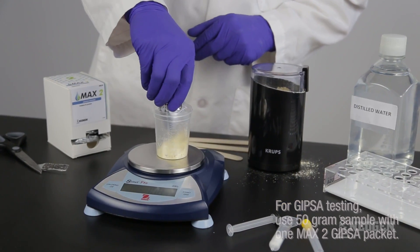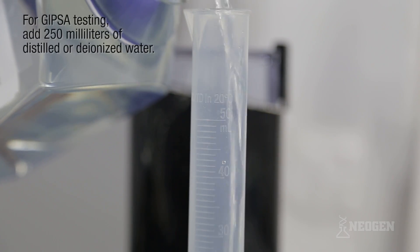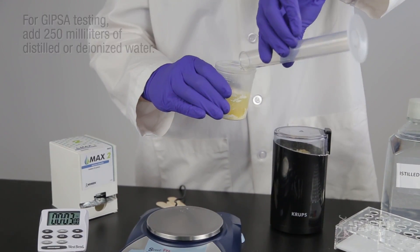Pour the contents of one Max 2 aqueous extraction packet into the sample cup. Add 50 milliliters of distilled or deionized water into the sample cup.